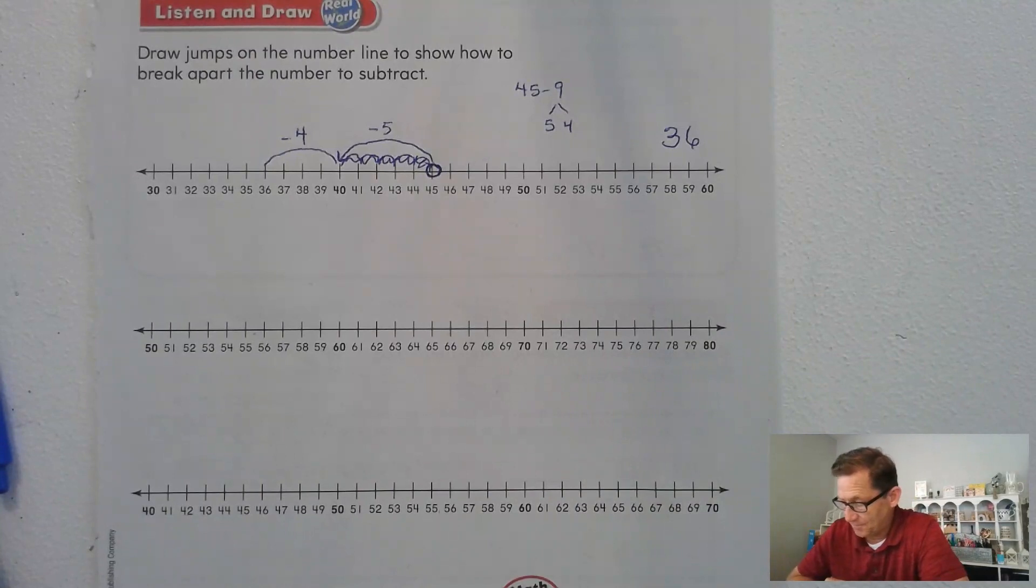Let's look at the second one now. Let's keep the same situation. Mrs. Hill had 72 paint brushes. She gave 7 to her art students. How many paint brushes does she have now? Again, she had 72 and she gave away 7. So go ahead and pause the video and show your jumps for solving that problem.